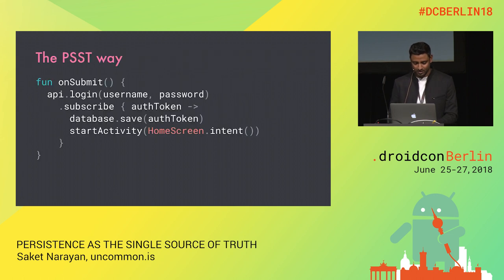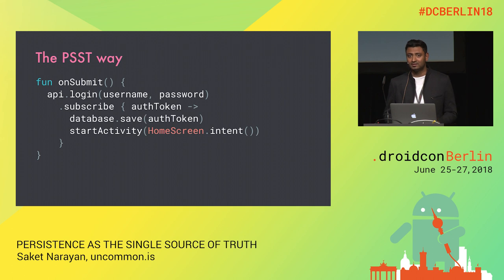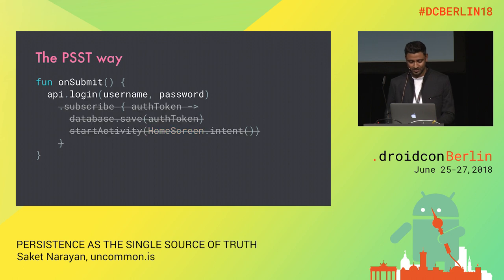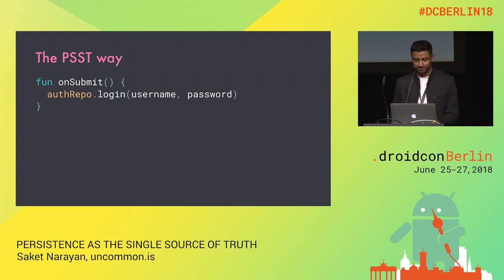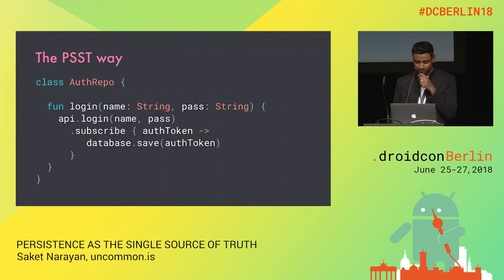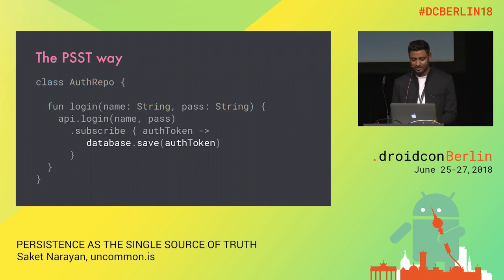By driving the UI from persistence, we can not only solve these problems but also make state management much easier. The first step is to stop communicating with the network layer directly and move the actual logic of making the login call to a separate class — an auth repository — that lives outside the screen's lifecycle. For this screen, login becomes a fire-and-forget call. There's no subscription for the result happening here. The auth repository handles making the login call and also handles saving the response to the database when the call succeeds.